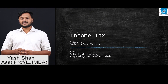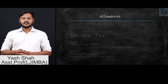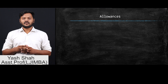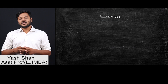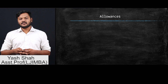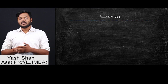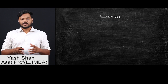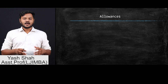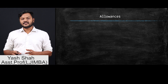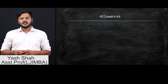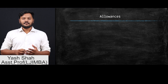Today we are going to start the second session of salary and we are going to discuss about allowances. Before going into allowances, let's understand what allowances mean. Allowances are additional benefits given by a company to its employees. These benefits can be either monetary or non-monetary in nature. Monetary benefits are known as allowances and non-monetary benefits are known as perquisites. In this session we discuss allowances; the next session will cover perquisites.